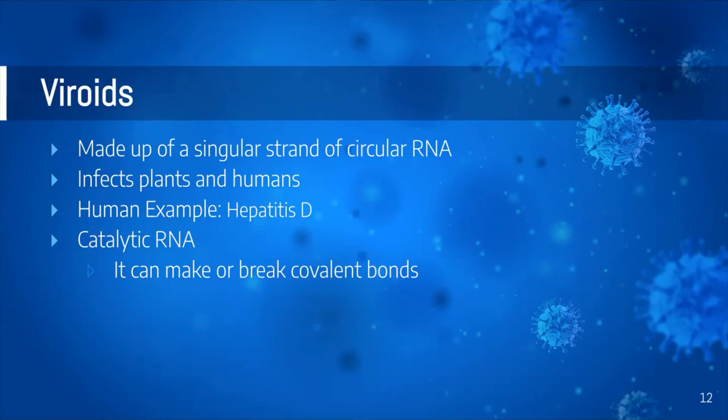How exactly do viroids replicate with just one circular strand of RNA? Because they are catalytic. An easy way to remember this is by using both of the C's in 'circular' and 'catalytic' — a tip from Khan Academy. Catalytic means it can make or break covalent bonds, and because of this, viroids can self-cleave to make more of themselves.